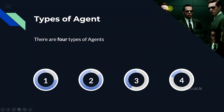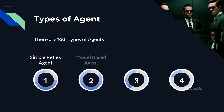Now we know what an agent is in artificial intelligence. There are four types of agents: the first one is the simple reflex agent, the second is the model-based agent, the third is the goal-based agent, and the fourth is the utility-based agent. We'll see these four types in detail in the next video, so I'll see you guys there.